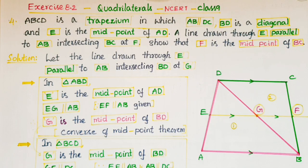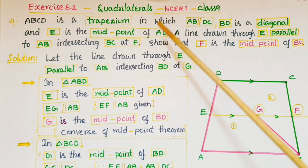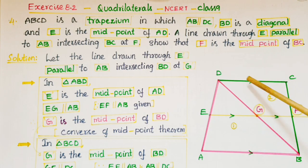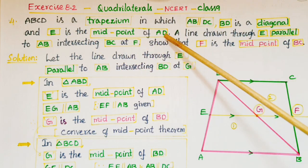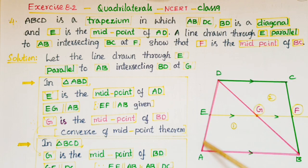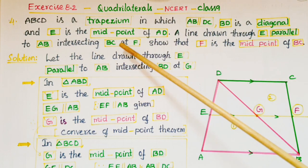Hello everyone, today I am going to tell the solution of the fourth problem from Exercise 8.2 from the Quadrilaterals chapter from NCERT Class 9. In this problem, ABCD is a trapezium in which AB is parallel to DC. In a trapezium, one pair of opposite sides is parallel, so AB is parallel to DC. BD is a diagonal and E is the midpoint of AD.